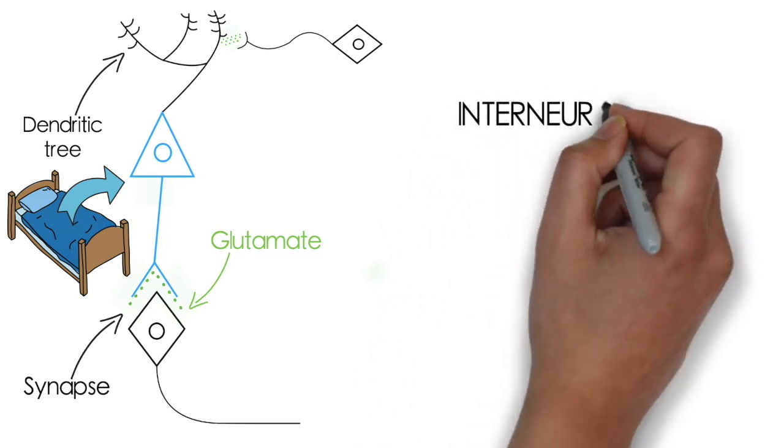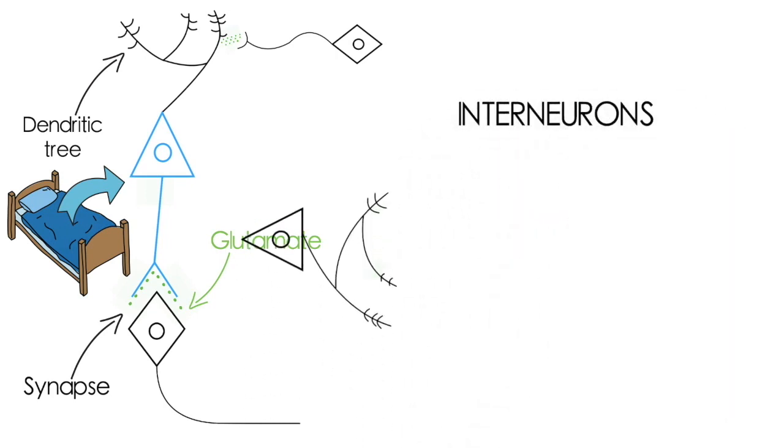So the next player in this are the interneurons. These guys also have a dendritic tree with synapses like this, and these are glutamatergic too.